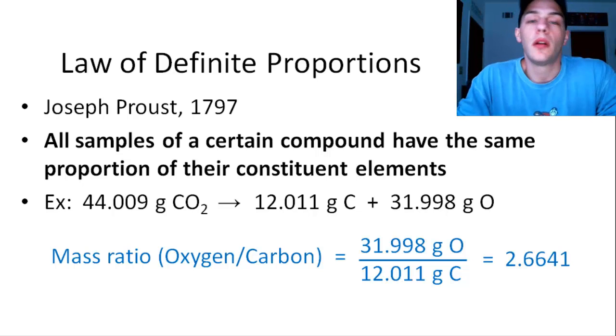So this ratio is going to be the same no matter where our CO2 sample came from. So in other words, if the carbon dioxide came from a combustion reaction, if it came from cellular respiration, if it came from some other synthesis of carbon dioxide, it doesn't matter how it was prepared, it's always going to have the same, assuming that it is pure carbon dioxide, it's always going to have the same 2.6641 ratio of oxygen to carbon.